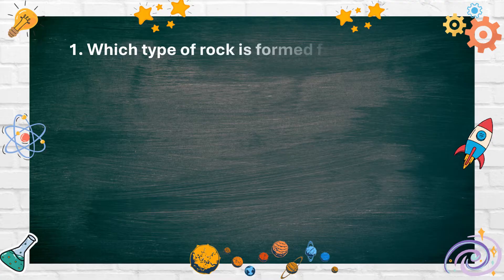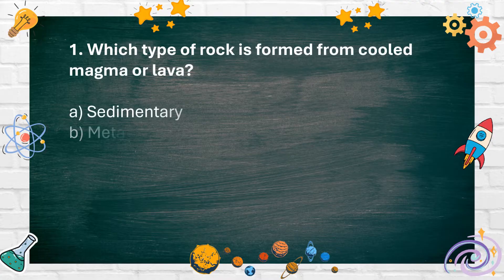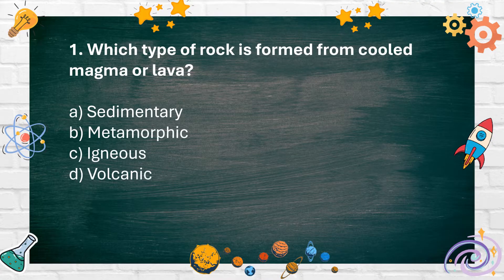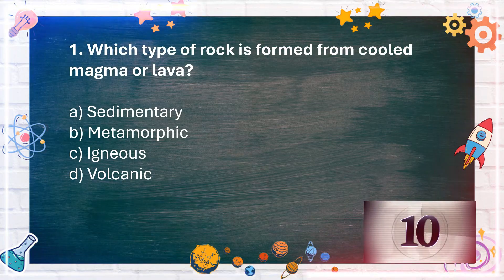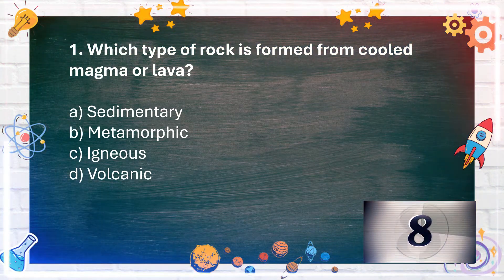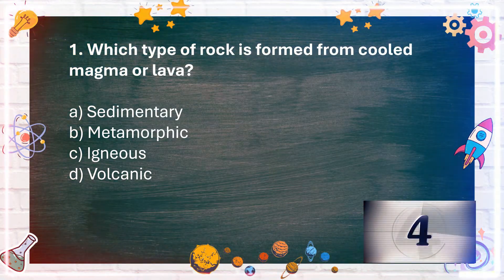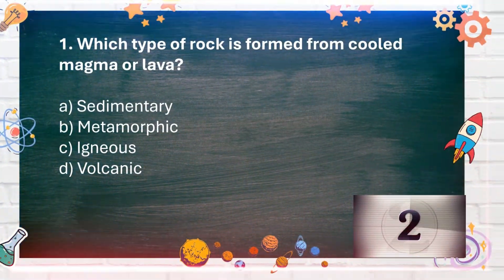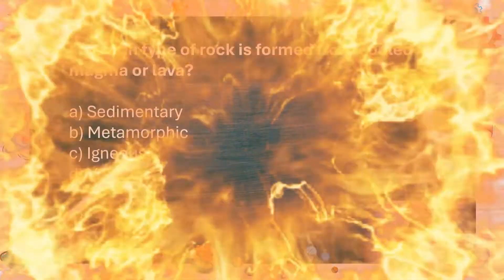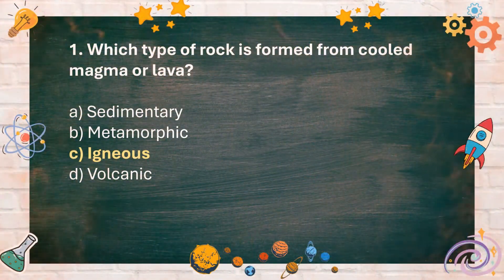Number 1: Which type of rock is formed from cooled magma or lava? A. Sedimentary, B. Metamorphic, C. Igneous, D. Volcanic. The answer is C. Igneous.